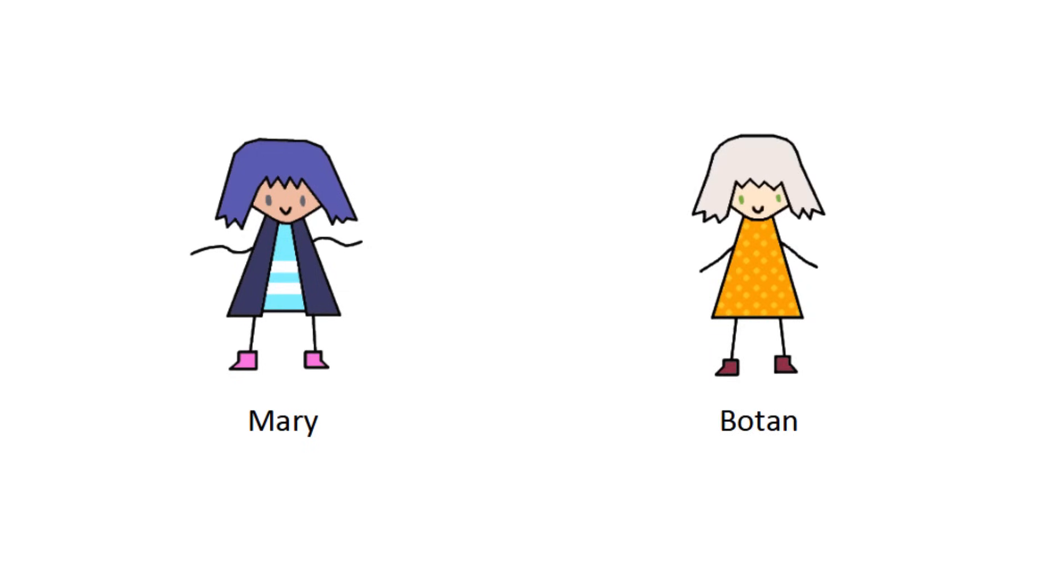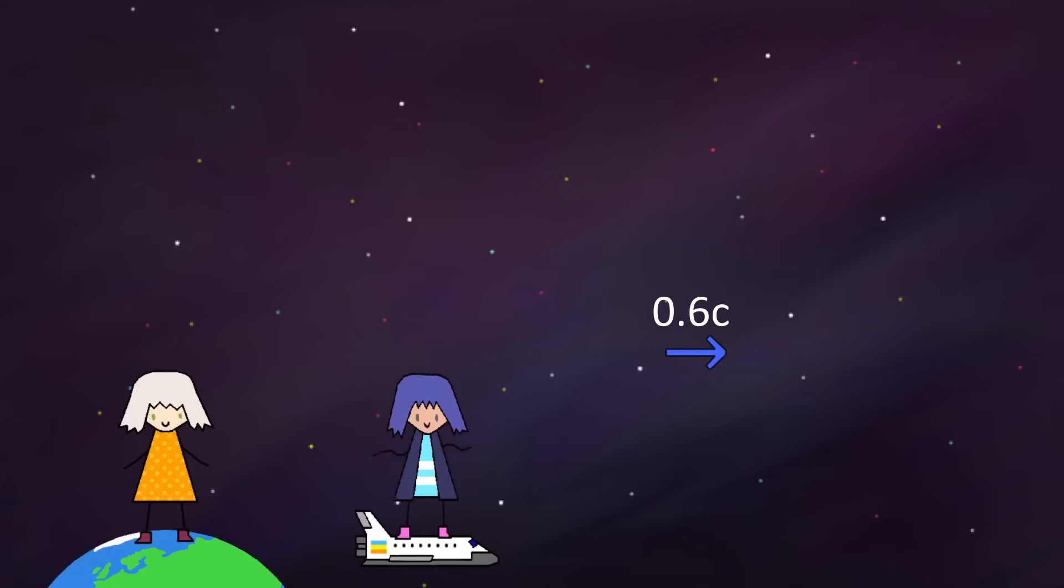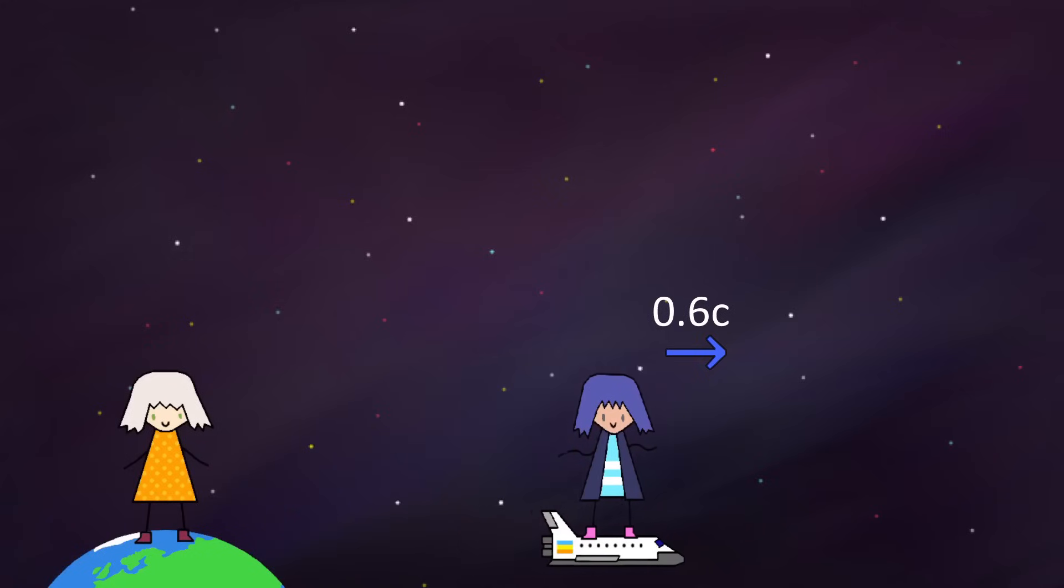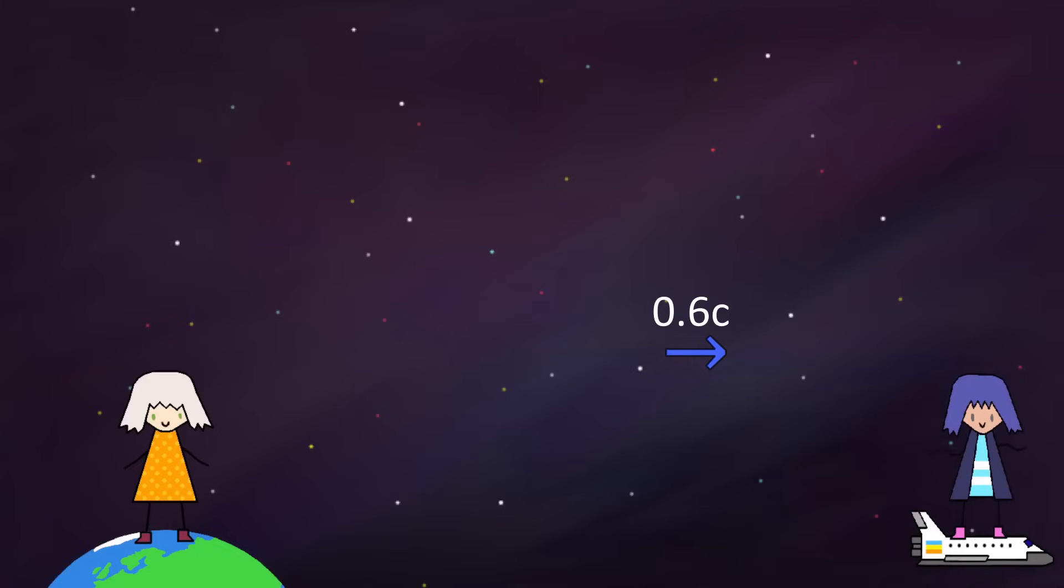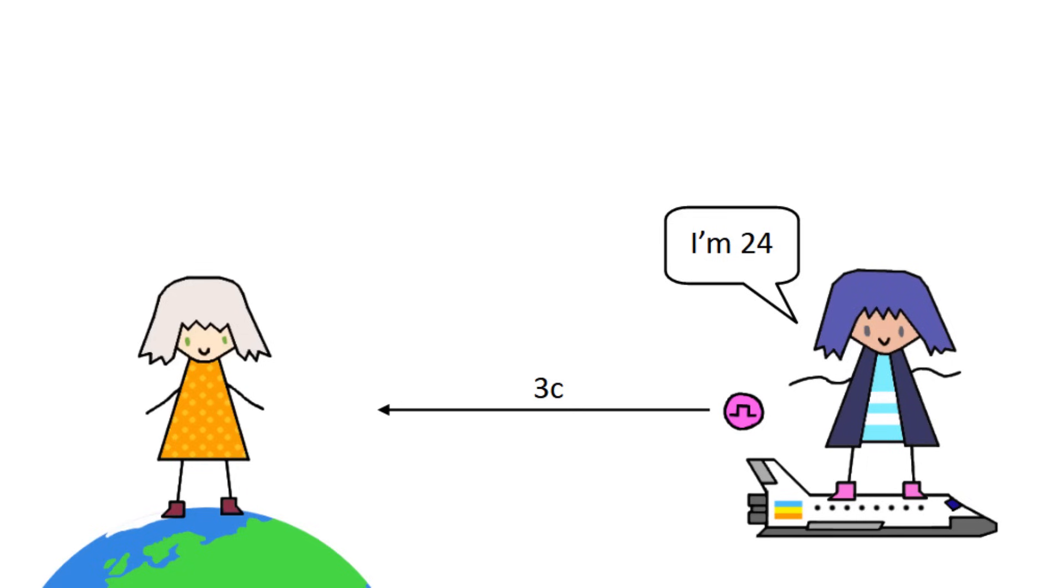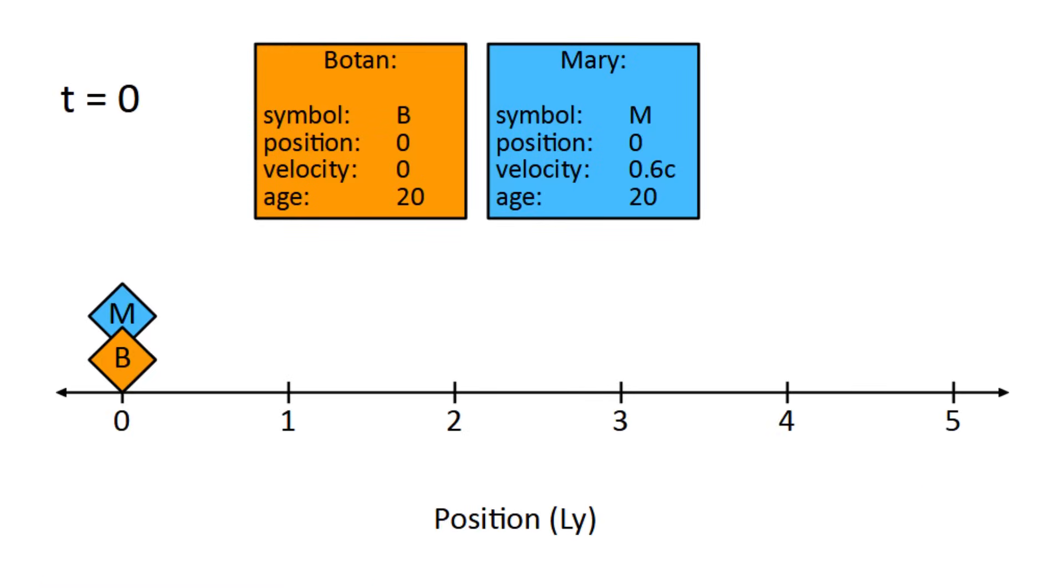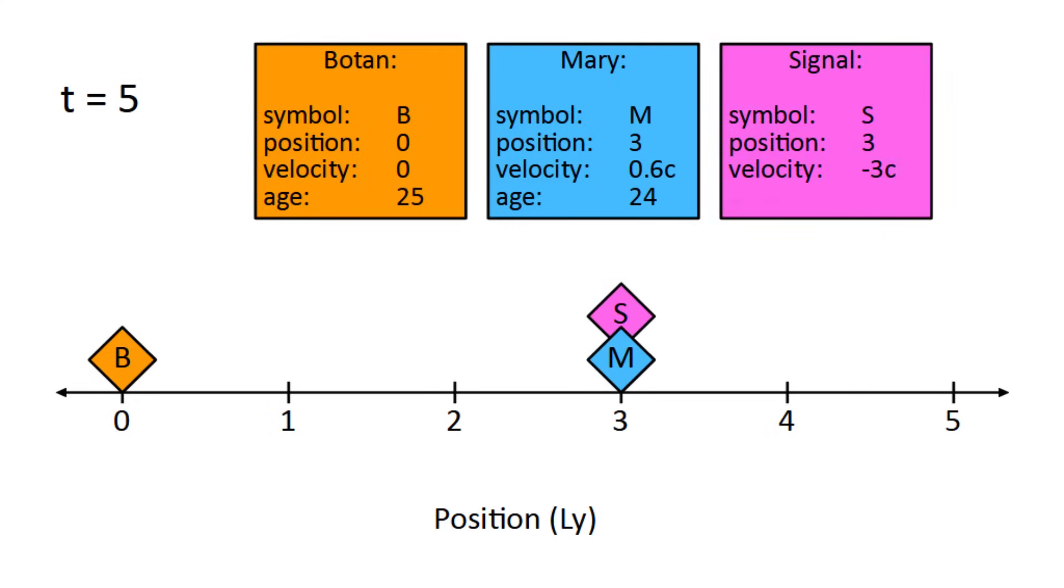As an example, imagine there are two observers, Mary and Botan. They both start off at the same age of 20. Botan stays on Earth while Mary takes off in a ship, traveling at 0.6c. When Mary turns 24, she sends a signal to Botan. This time, we'll say that the signal travels at 3c. In Botan's reference frame, it takes 5 years for Mary to turn 24, by which time she's 3 light years away. The signal would then clear the distance in only 1 year, and Botan would receive it at the age of 26. This seems fine so far, but remember, since the events of Botan turning 26 and her receiving the signal are also in the same place, they must be simultaneous in all reference frames.